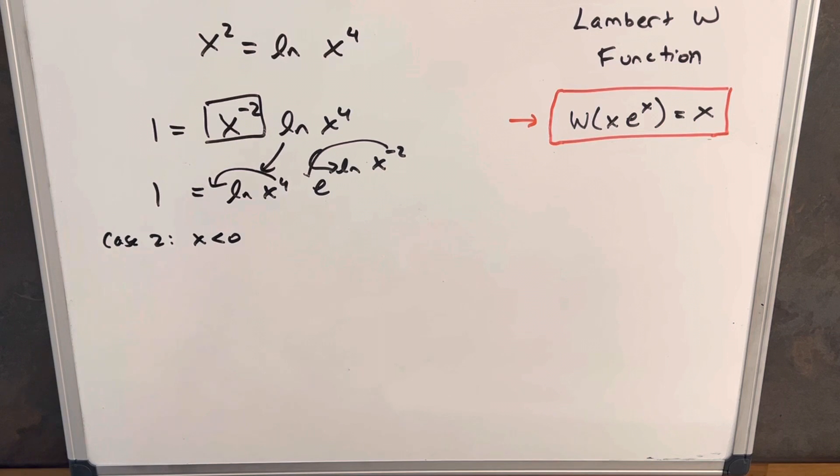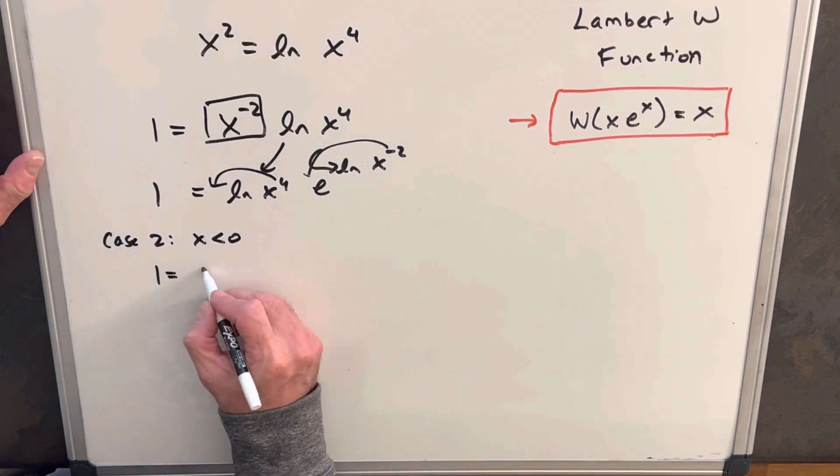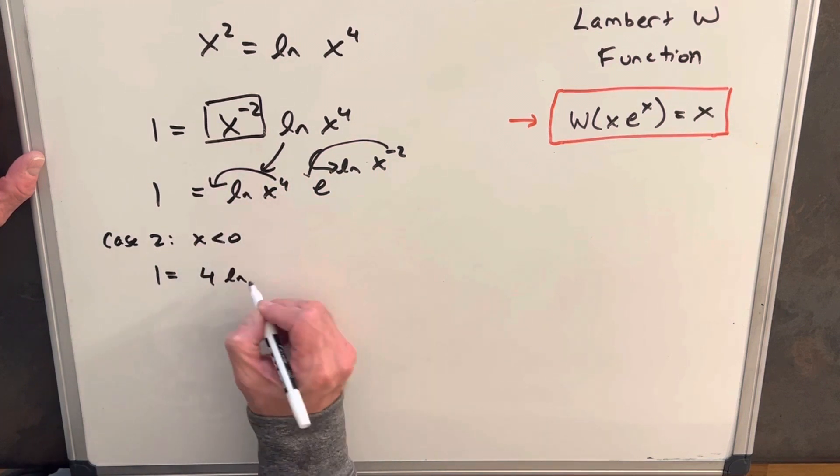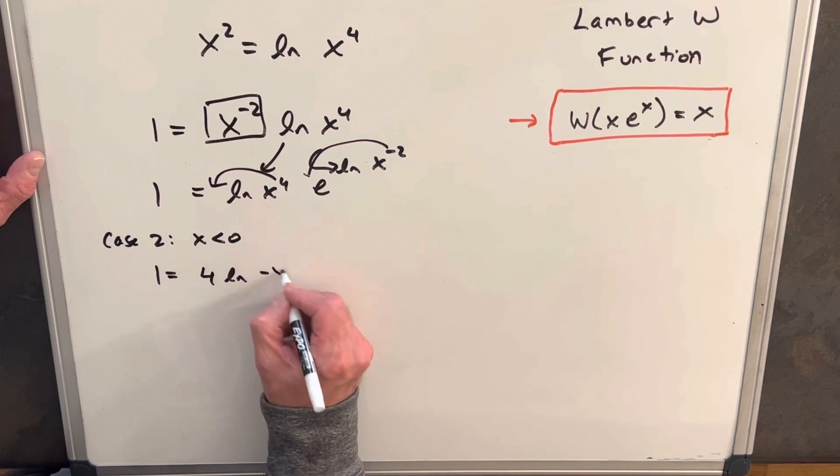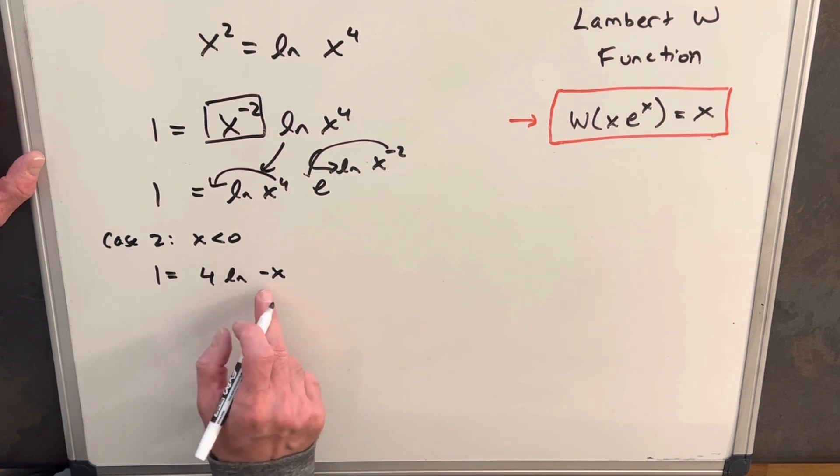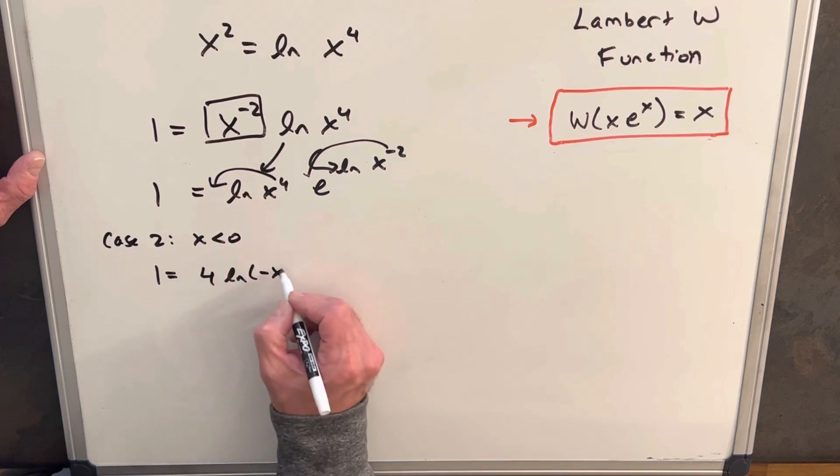Okay, so next we'll look at our case 2 when x is less than 0. We'll rewrite this. We're going to have 1 equals, we'll still remember we moved our 4 to the front of the ln x, but now because we're saying x is less than 0, we need to put a minus sign on there to negate that. So then that way, our input on the natural log function is still positive.